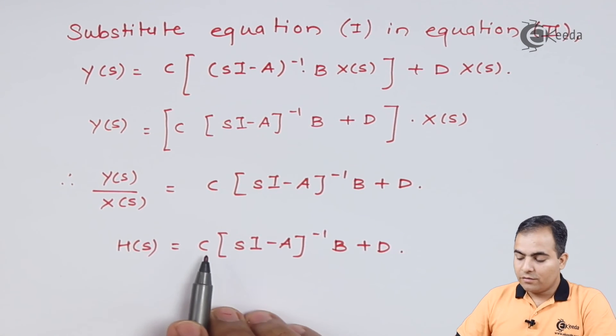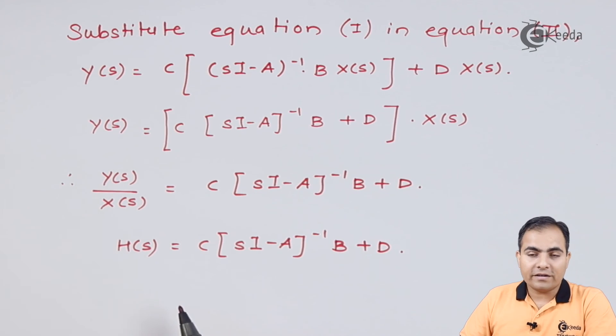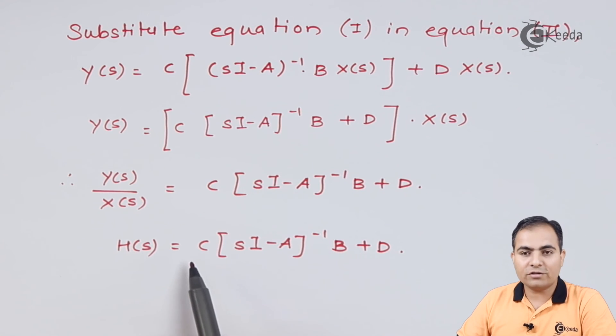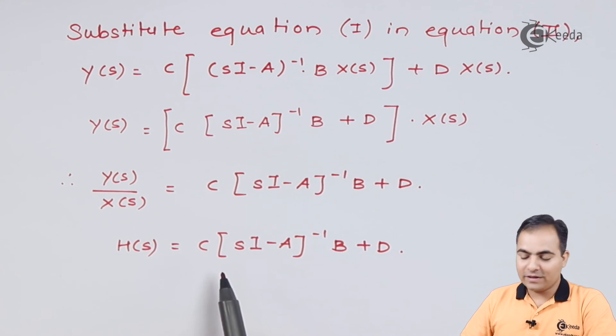Now what do you mean by C, A, B and D? These all are my matrix where A is my state matrix, B is my input matrix, C is also my state matrix and D is my input matrix. What is s? S is simply a transformation in Laplace domain and I is the identity matrix.